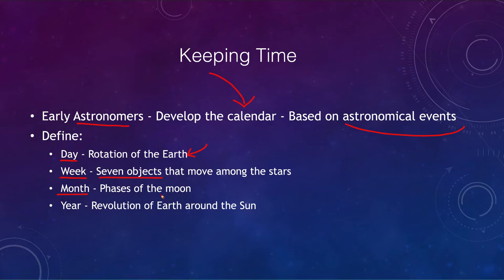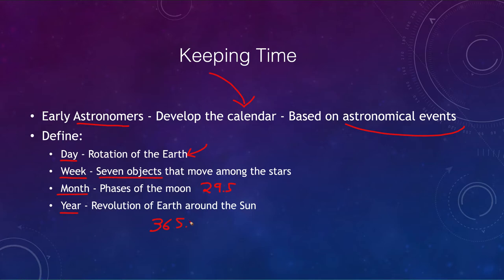Our month is based on the phases of the moon. The phases of the moon go through a 29-and-a-half-day cycle, and that's very close to a typical month. A year is the revolution of the earth around the sun — how long it takes the earth to move around the sun, which is 365 and a quarter days, and that gives us our year.